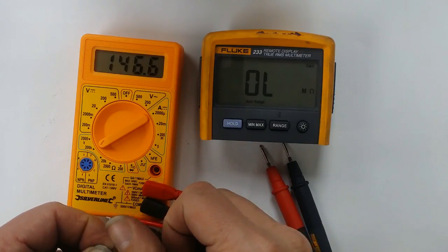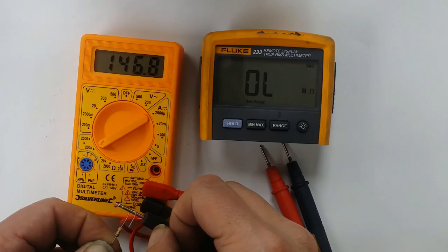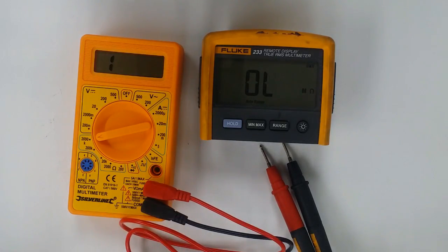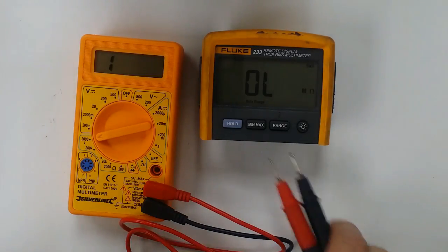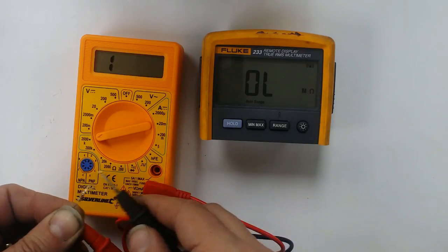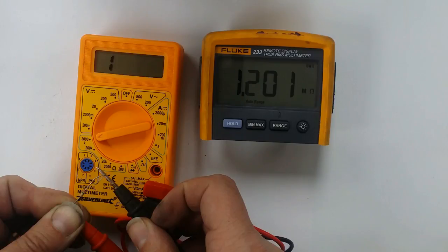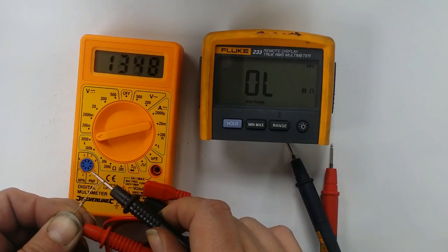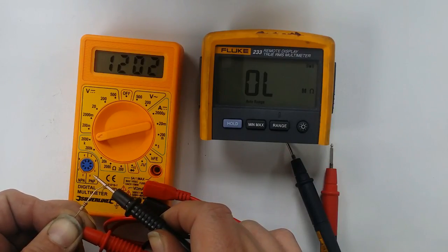147.6 on the Fluke, I hope you can see me here. Let's try this one. Pulled that too hard. 146.8 on the Silverline. Still not bad at all. 2,000k range.